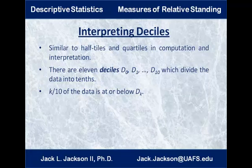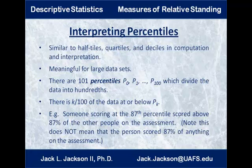Just like we have quartiles and half-tiles, we can talk about deciles. There are 11 of them from d zero through d ten, and they divide the data into tenths. D sub k is the value so that k-tenths of the data is at or below it — so d sub 3 is where three-tenths of the data falls below. Similarly, we can have percentiles. There are 101 of them from p zero to p sub 100, dividing the data into hundredths — k-hundredths of the data is at or below p sub k. So someone scoring at the 87th percentile scored above 87 percent of the other people on the assessment. This does not mean they got 87 percent correct — it means they scored better than 87 percent of people on that same assessment. Percentiles are used a lot in various contexts, particularly for large data sets.